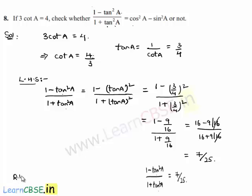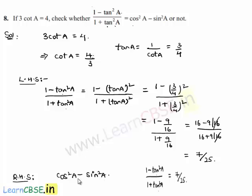Let us also find the value of the RHS, that is cos square a minus sin square a. In order to find this, let us initially find the values of sin a and cos a from the given relation that tan a equals 3 by 4.